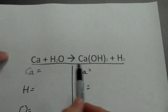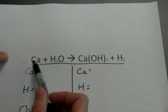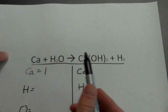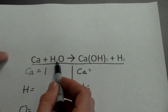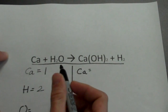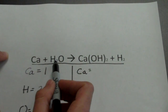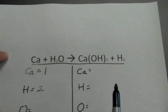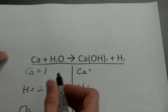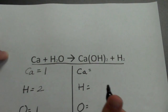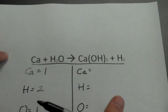Let's take it step by step, starting with the reactant side to the left of the yield sign. Calcium is by itself — no subscript, no coefficient — so I just have one calcium. Hydrogen: H2O has a subscript of 2 on the hydrogen, so I have two hydrogens. Oxygen is by itself with no subscript and no coefficient over here, so oxygen is also one. On the reactant side: one calcium, two hydrogens, and one oxygen.